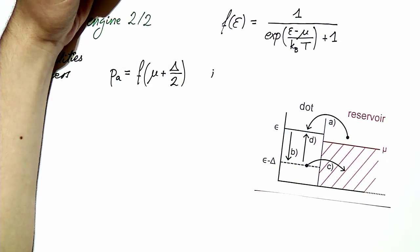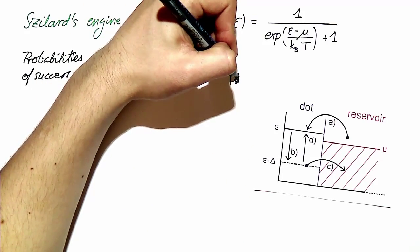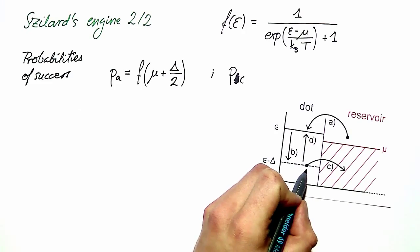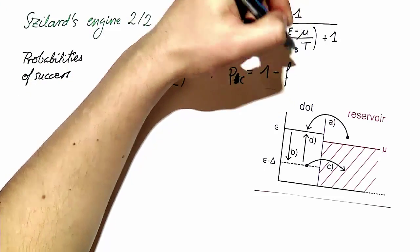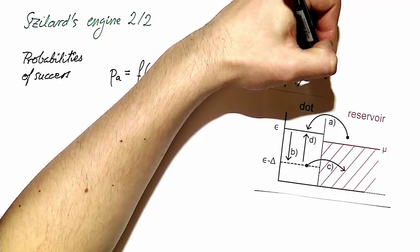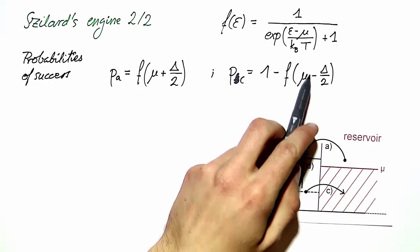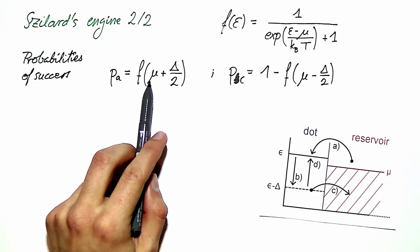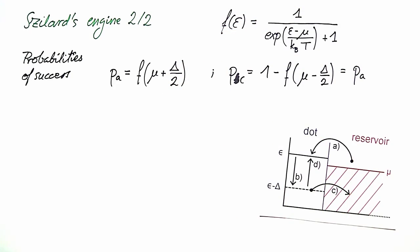This makes things simpler because the probability of having a successful measurement in step C is the probability of finding an empty dot, which is 1 minus the Fermi distribution function at mu minus delta over 2. If you plug in the formula for the Fermi distribution function, you will see that this expression is equal to F of mu plus delta over 2. So P_C and P_A are equal — we are dealing with the same probabilities in both steps.